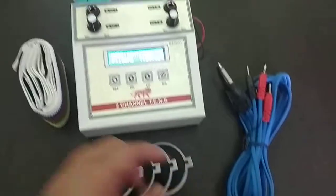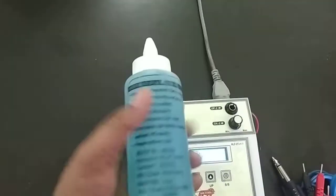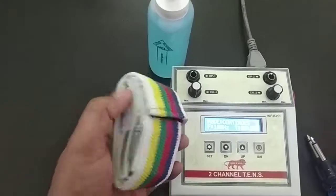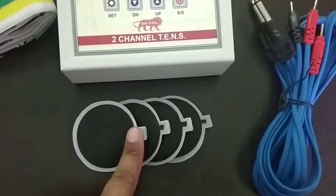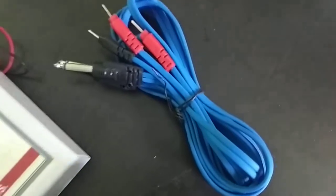These are screws. This is gel bottle. And this is belt. These are pads. And this is output wire.